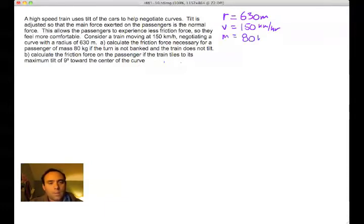So getting started, what we're going to do here is put down some of the variables that we have. Again, the radius is 630 meters. The velocity is 150 kilometers per hour. The mass of the person we're going to consider is 80 kilograms. And the bank of the turn is 9 degrees.